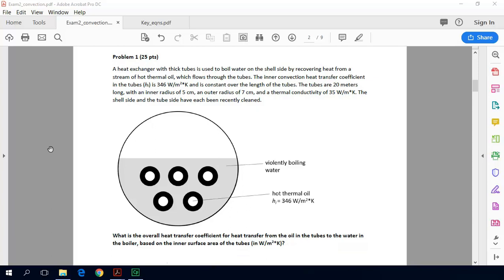With a thermal conductivity given, we're also told that the shell side and the tube side have each been recently cleaned, so we can neglect any fouling thermal resistance. We're asked to find the overall heat transfer coefficient for heat transfer from the oil in the tubes to the water in the boiler based on the inner surface area of the tubes.